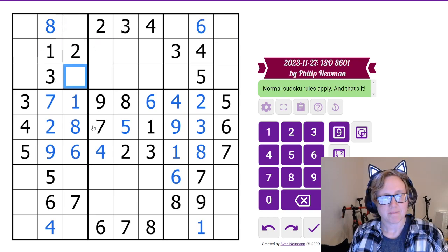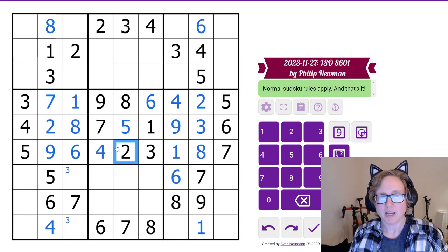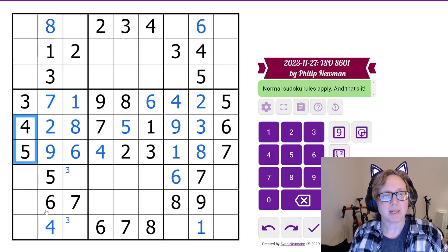Now what else do we need? We need a 3 in one of these cells, because 3 can't go in those cells since these see a 3. We need 4 and 5 up in this region. 4 and 5 can't go in any of these cells, so they must be here and here.